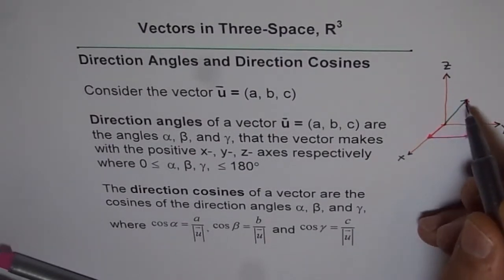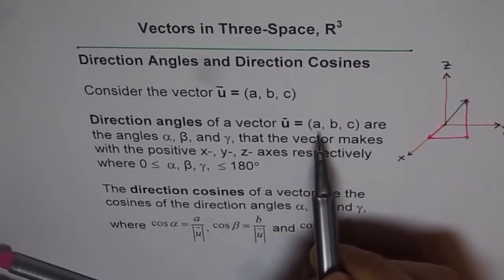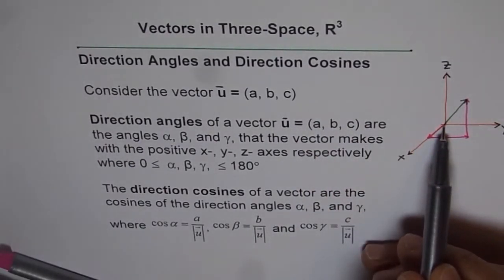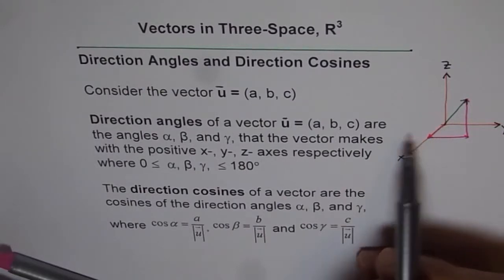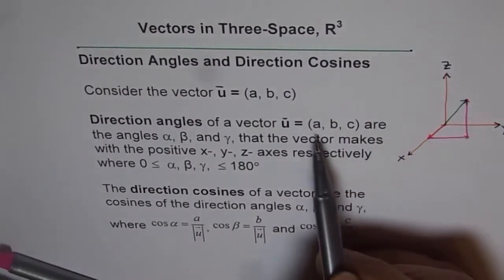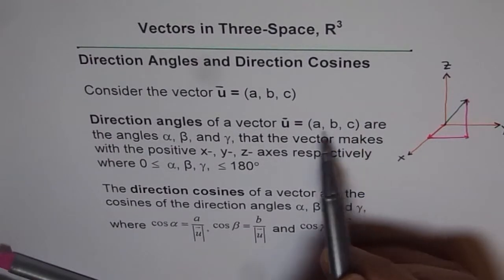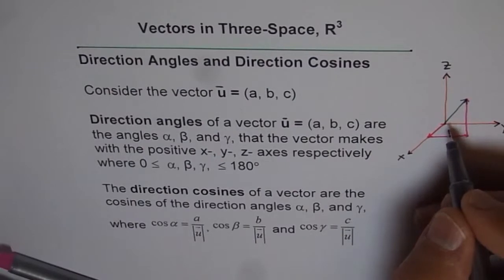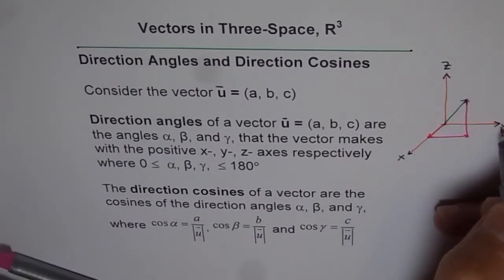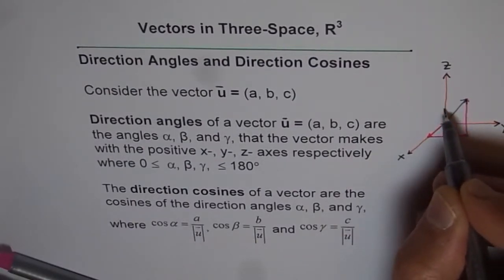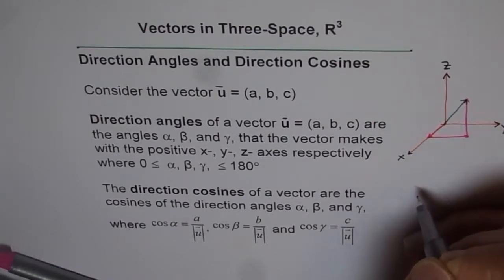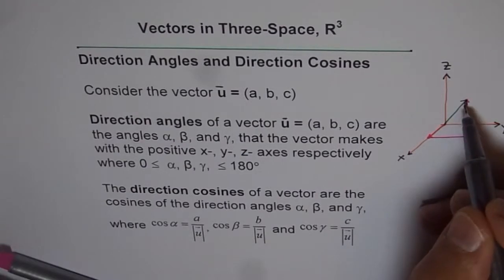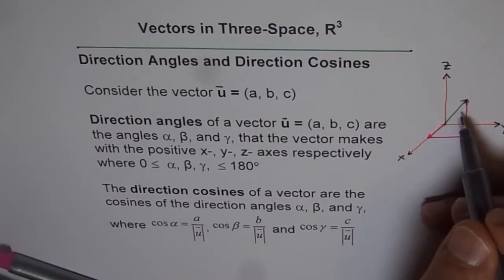We can always find the magnitude of this vector as the square root of A² + B² + C². Since it is at the origin, we get the magnitude by squaring, adding, and taking the square root. This vector can be given direction with reference to the Y axis, Z axis, and X axis — all three. That is how we give direction to a vector, and we call them cosines.